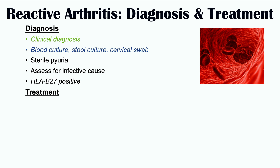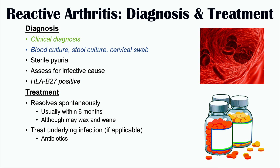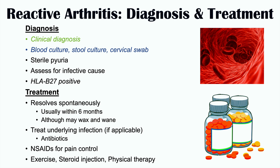Once diagnosed, treatment of reactive arthritis is often supportive, as the condition frequently resolves spontaneously on its own, usually within six months, though it may wax and wane. It's also important to treat any underlying infection if still present — antibiotics would be used in that case. Non-steroidal anti-inflammatory drugs (NSAIDs) are important for pain control.